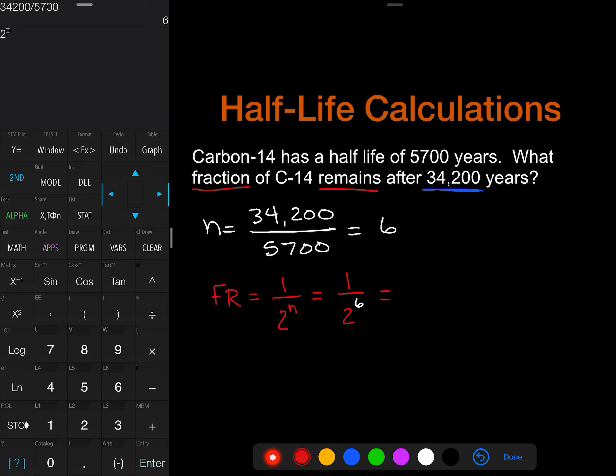And when we do that I'm just going to go 2 to the 6th which should give us 64. Perfect, it does. And so I'm going to keep this in the fraction as a fraction because it's asking for the fraction. So that's going to be 1/64th. That is our fraction remaining.